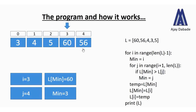Now i becomes 3 and j becomes 4. The j loop runs for only one iteration. l[min] is 60 (min=3) and l[j] is 56 — since 60 is greater than 56, the value of j is assigned to min, so min becomes 4. The j loop ends and 60 gets swapped with 56. After swapping, all the numbers are now in sorted order and the program is complete.